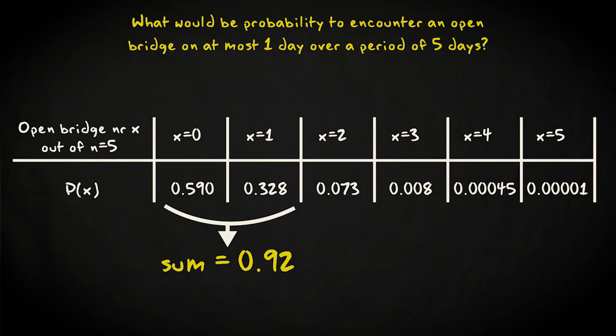To answer this last question, we may use the cumulative binomial probability distribution, giving the total probability of all outcomes lower than or equal to a given number of successes.